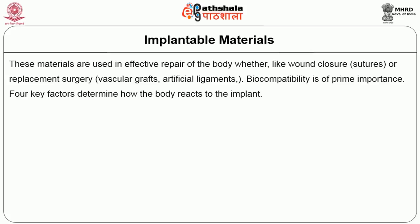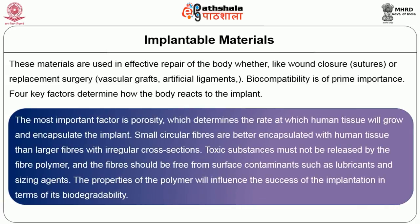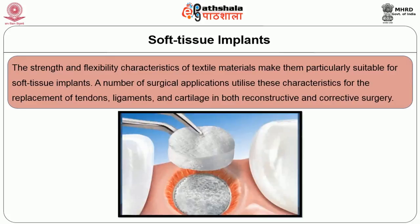Implantable materials are used in effective repair of the body for wound closures or replacement surgery, where biocompatibility is of prime importance. Four key factors determine how the body reacts to implant textiles. The most important factor is porosity, which determines the rate at which human tissue will grow and encapsulate the implant. Small circular fibers are better encapsulated with human tissue than large fibers with irregular cross sections. Toxic substances must not be released by the fibers, and fibers should be free from surface contamination such as lubricants and sizing agents. The properties of the polymer will influence the success of the implant in terms of its biodegradability.